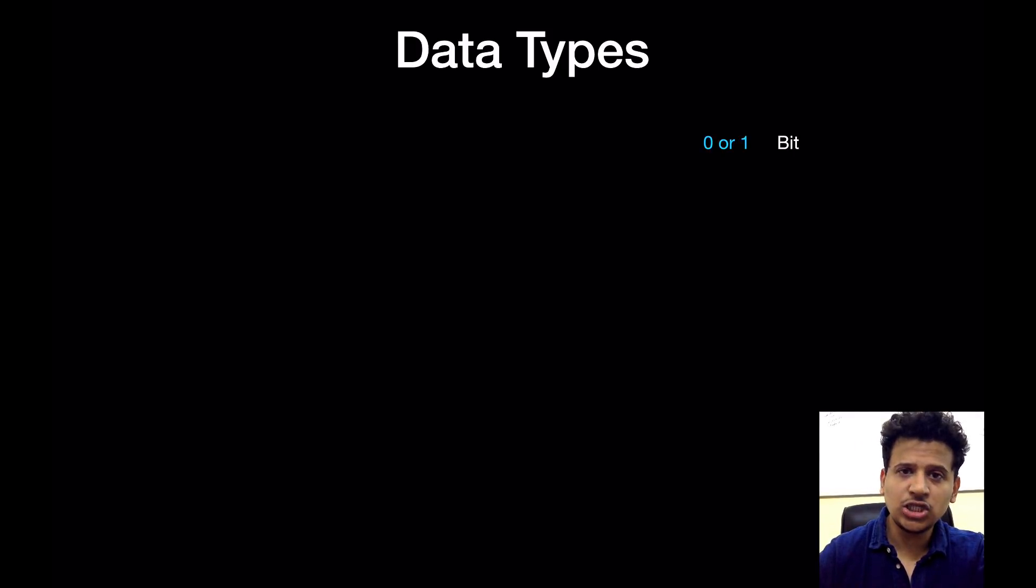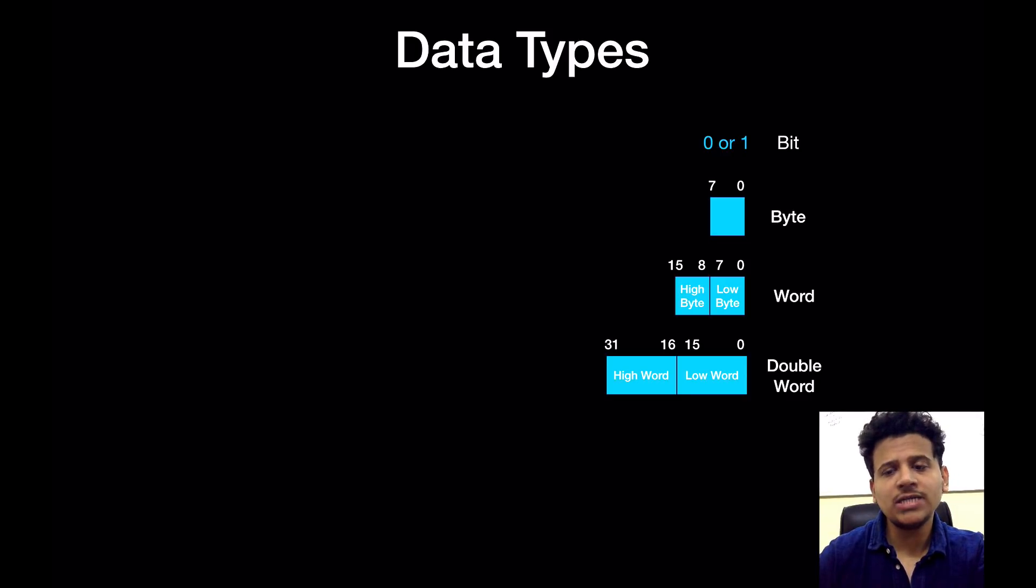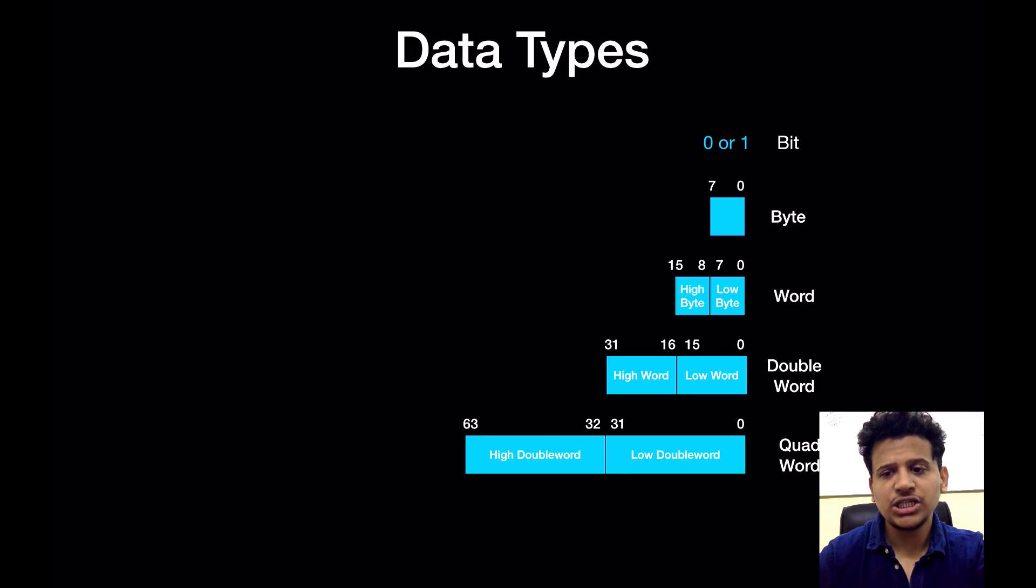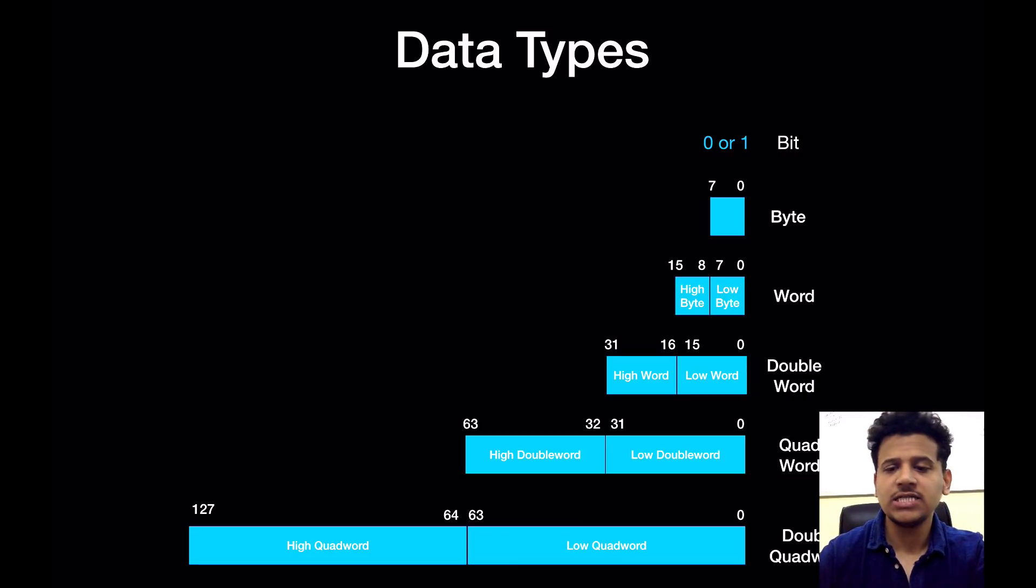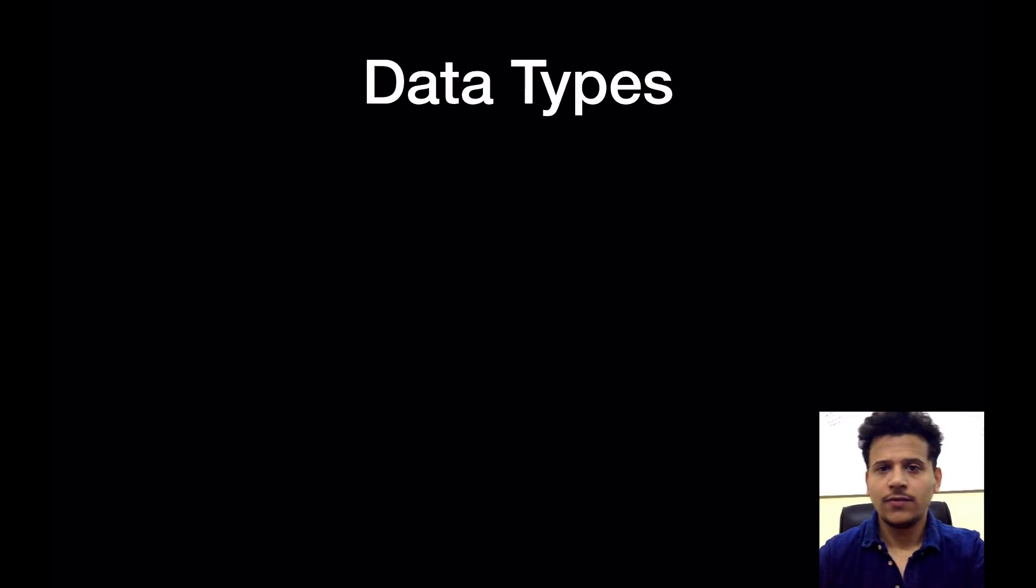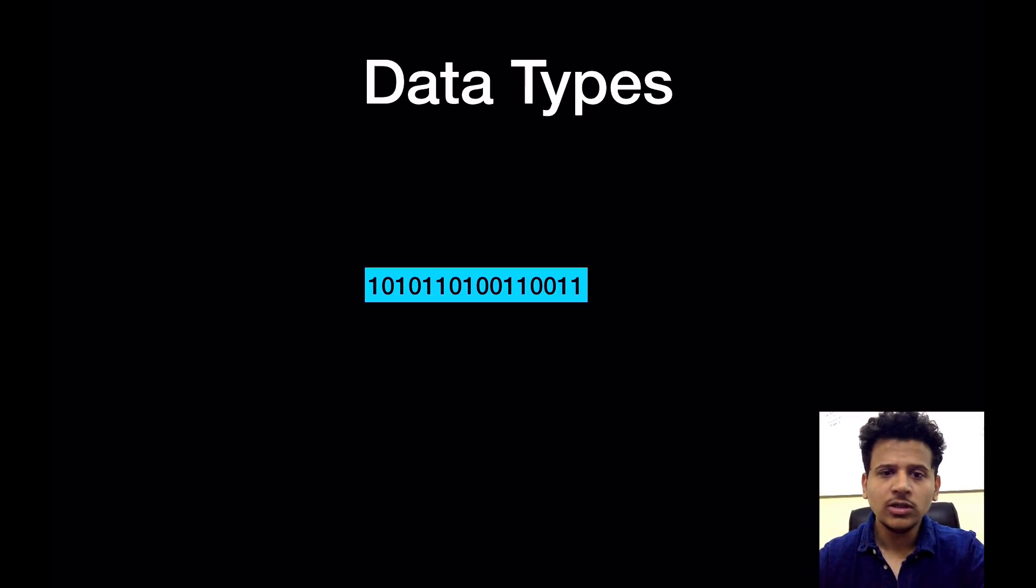Now we'll move on to the data types. The first data type is a bit - is either 0 or 1. The second one is a byte, so 8 bits equal to 1 byte. Similarly, 16 bits is word, 32 bits is double word, 64 bits is quad word, and 128 bits is double quad word.